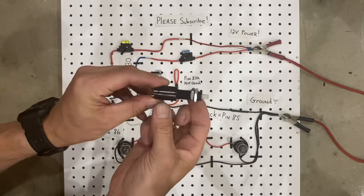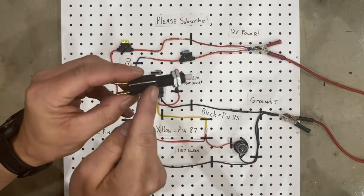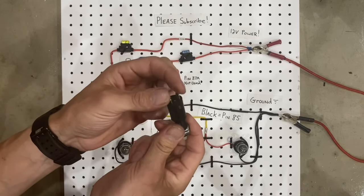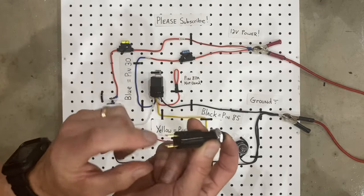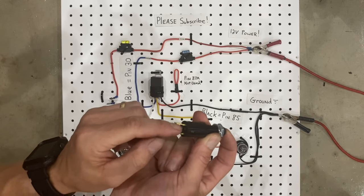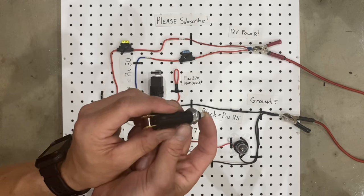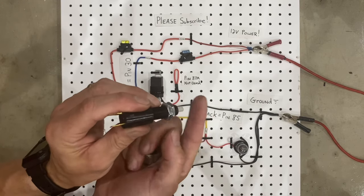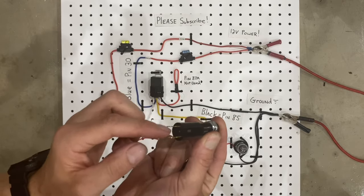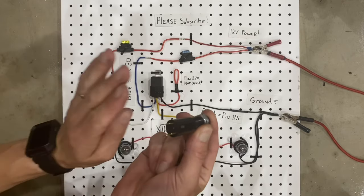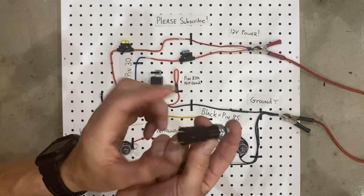...are the type that goes in the brake pedal. Now this kind is normally connecting these two things together, and when this is pushed in it actually breaks the connection right here. This is meant to go on the top of the brake pedal, so when the brake is up this is open and there's no connection between those two. As soon as you push the brake pedal down, this little plunger pops out and it makes the connection between these two points.